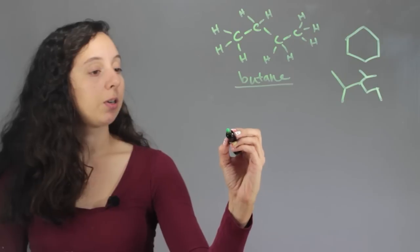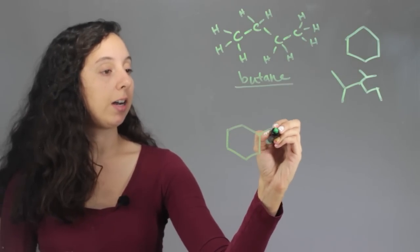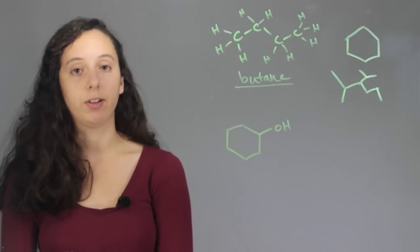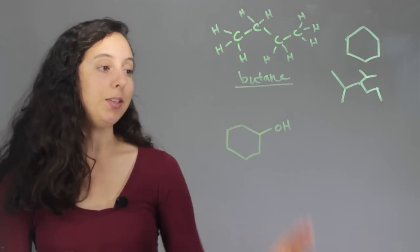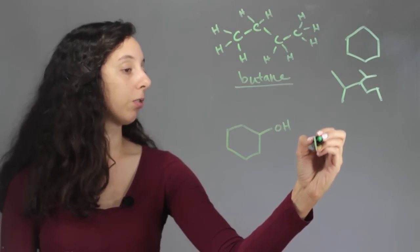So if we have our typical hydrocarbon, cyclohexane, and we just add an OH, we've functionalized it. So now it's a functionalized hydrocarbon. It has this alcohol group on it. And there's a bunch of different functional groups.